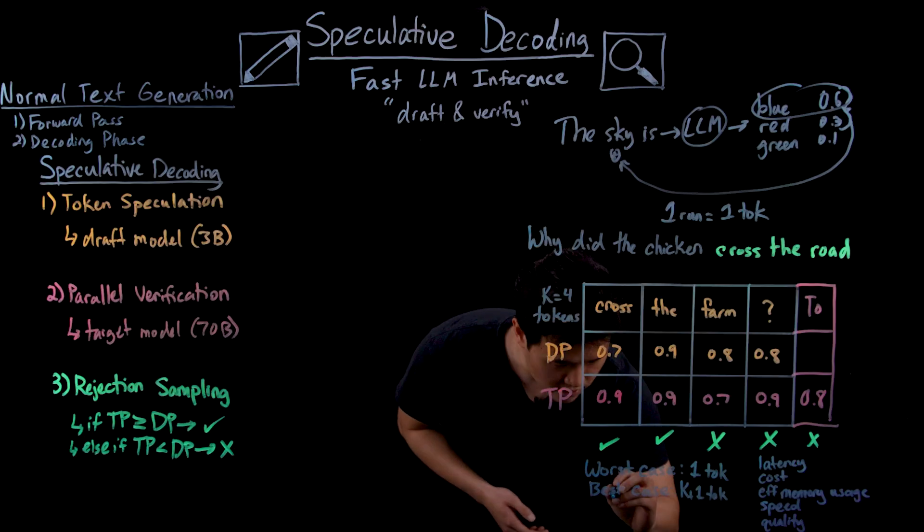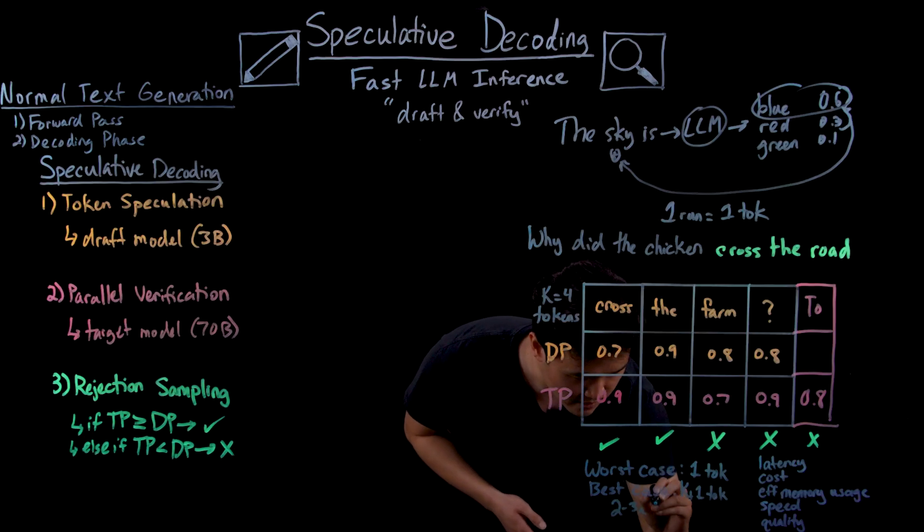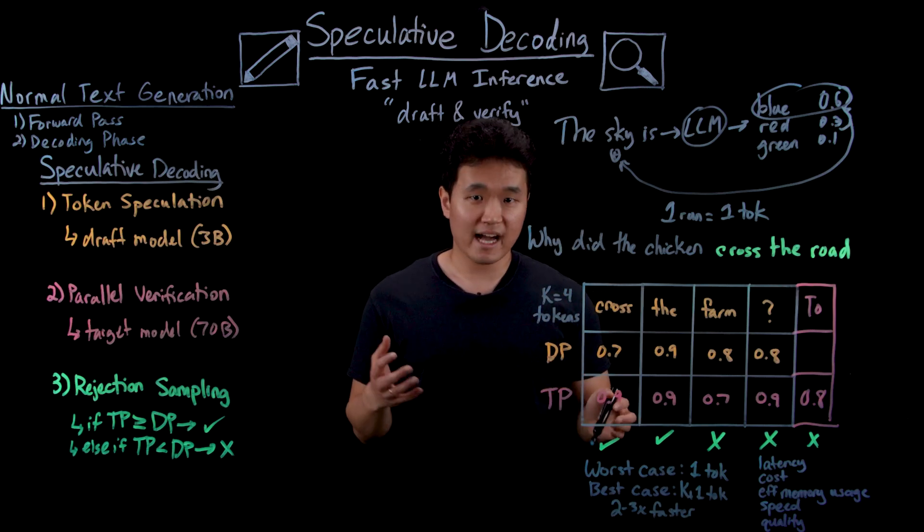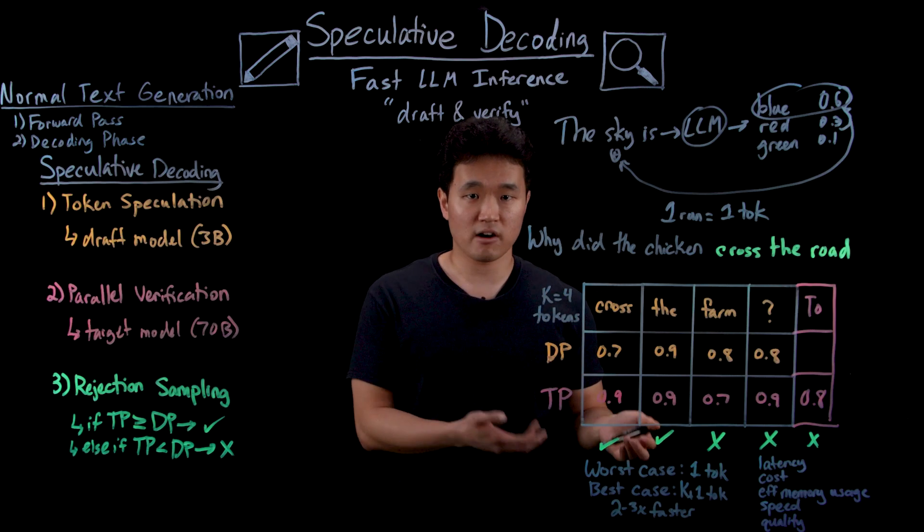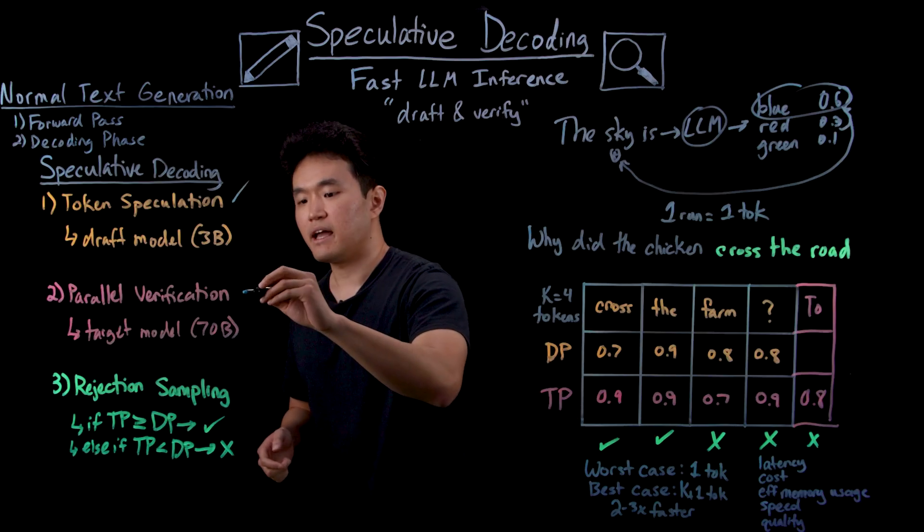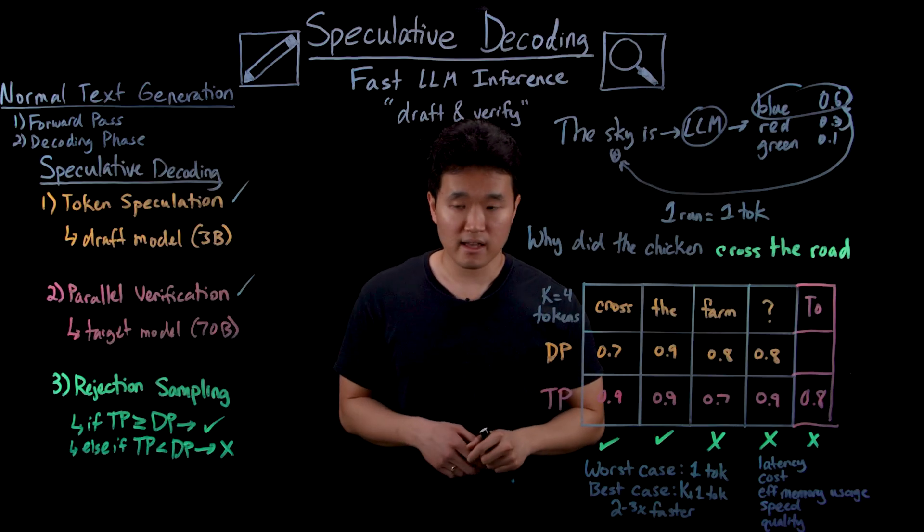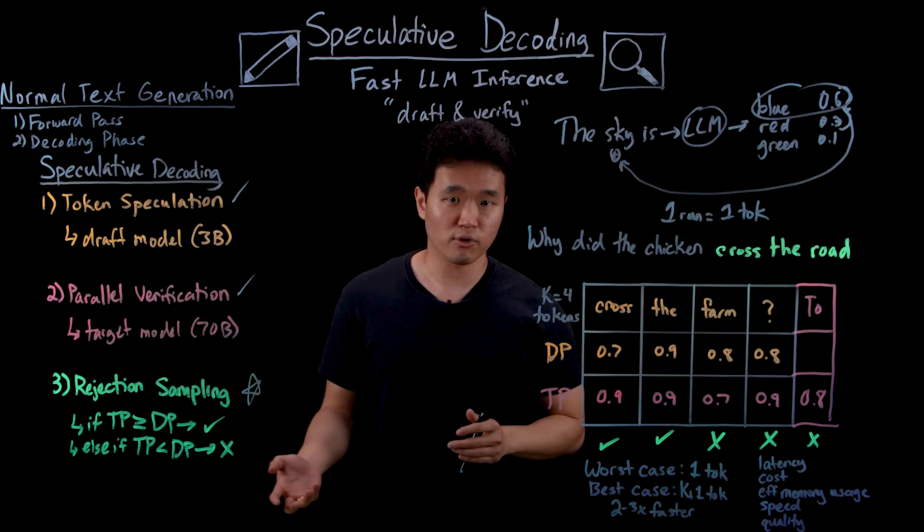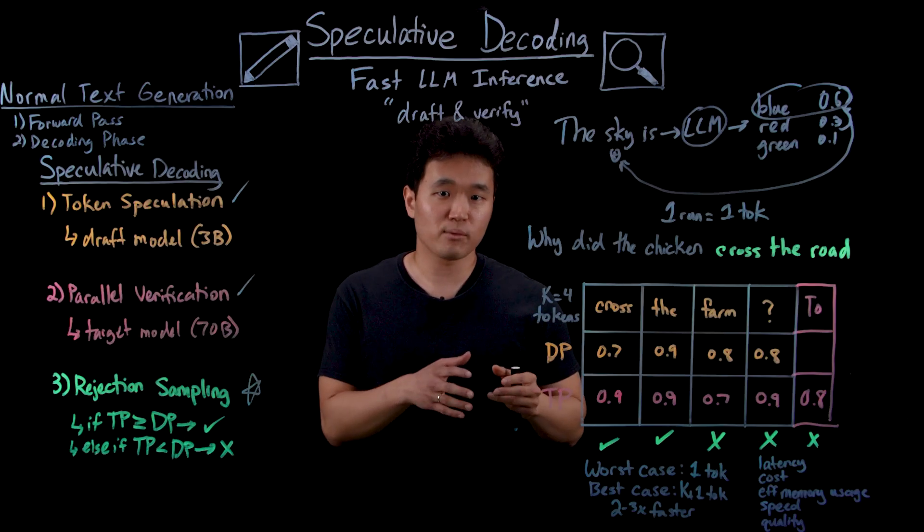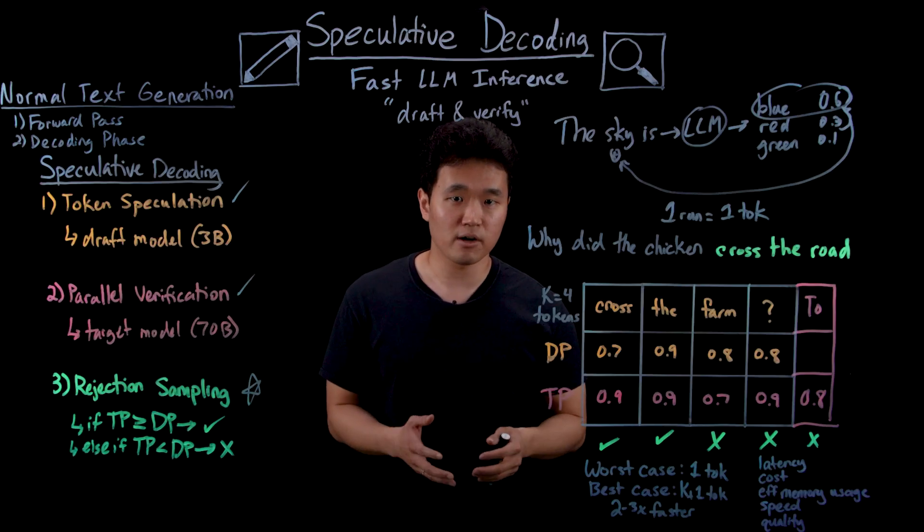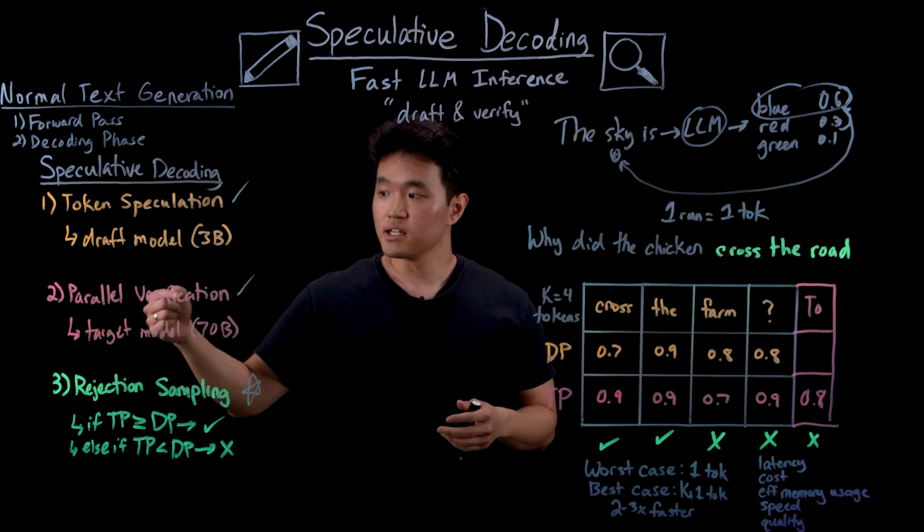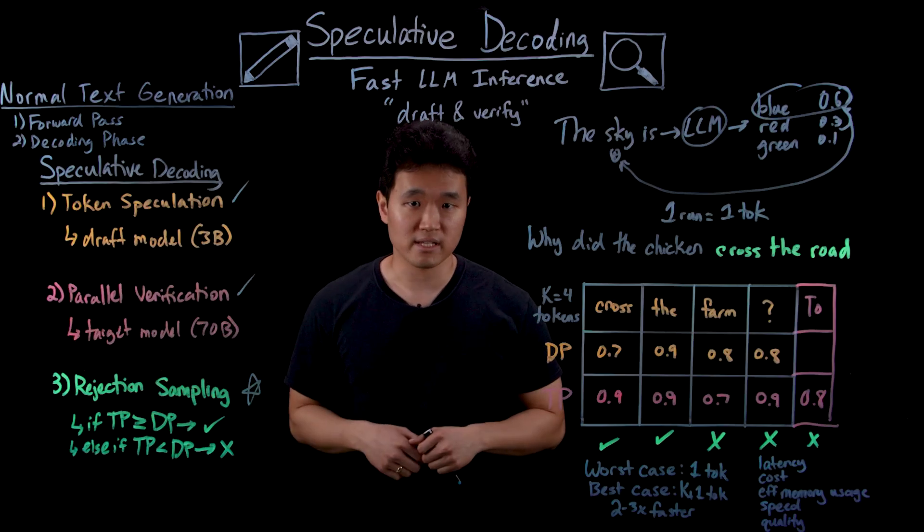On average, this can lead to two to three times faster inference speeds compared to normal LLM generation. So while the actual speedups in this process are achieved by the token speculation and parallel verification steps, it's the rejection sampling step that's arguably the most important because it ensures that we don't have to sacrifice any quality of output by trying to recover the distribution of the target model just by sampling from the draft model's output.